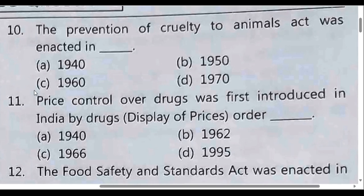The Prevention of Cruelty to Animals Act was enacted in. Option C: 1960.